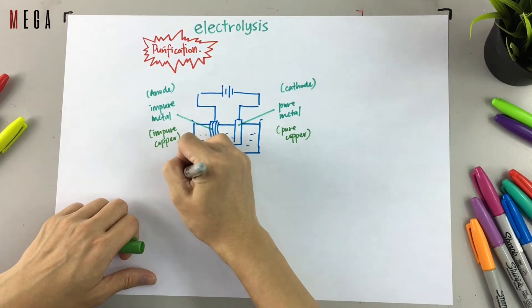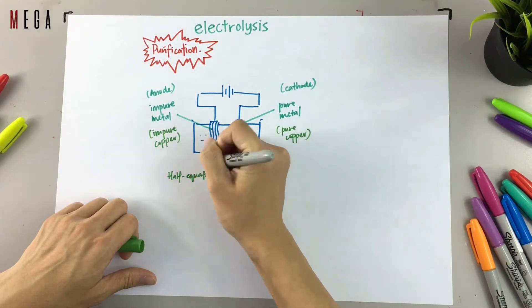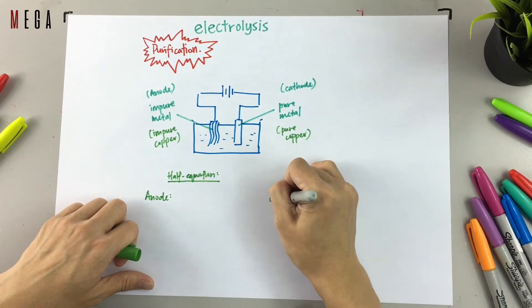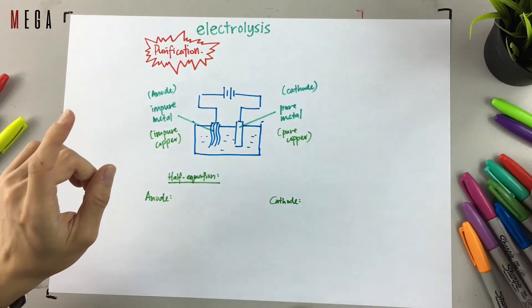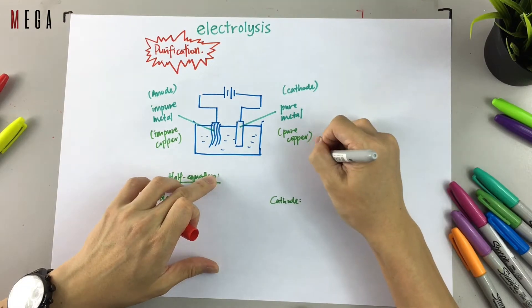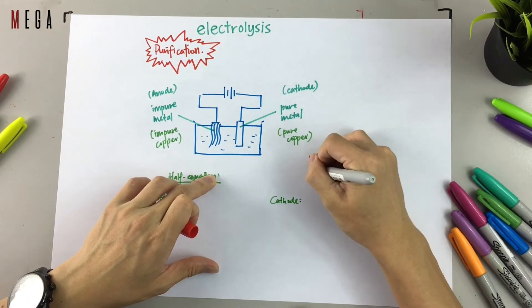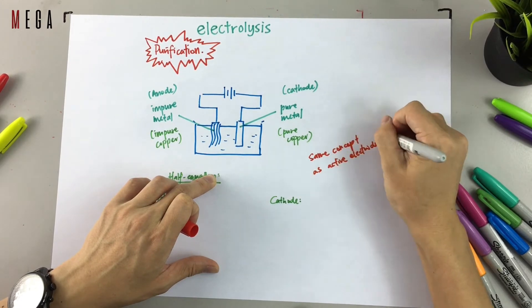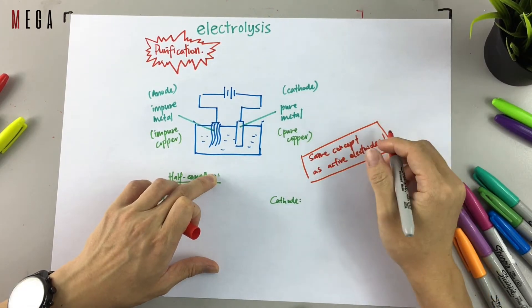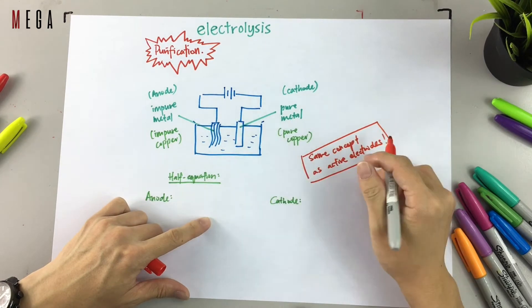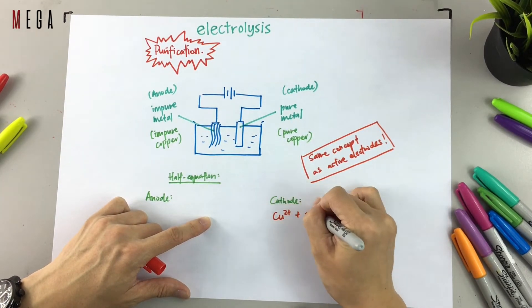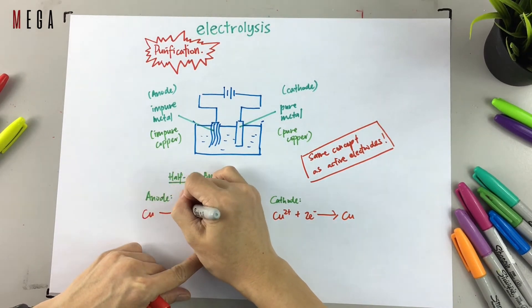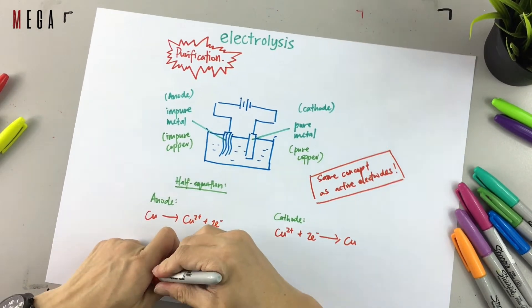So what are the half equations at anode and cathode? Remember both anode and cathode are both metals. Therefore the ions to get discharged basically with the same concept of active electrodes. Tips, we always start with cathode first. Cathode, since it is copper, therefore Cu2+ ions will get discharged at cathode. Then you reverse the half equation, it becomes the equation for anode.